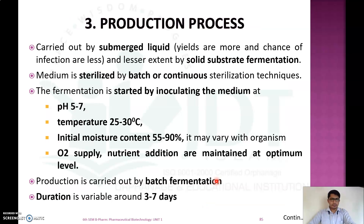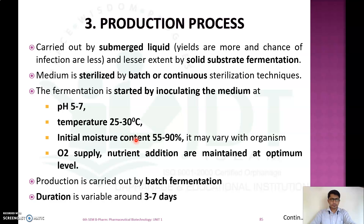Alpha amylase is produced by fermentation, mainly carried out by submerged liquid fermentation, in which the yield is more and chance of infection is less compared to solid substrate fermentation. Before starting fermentation, we sterilize the culture media by batch or continuous sterilization. Fermentation is carried out at pH 5 to 7, temperature 25 to 30°C, with initial moisture content of 55 to 90%, and sufficient oxygen supply and nutrition are maintained at optimum levels.